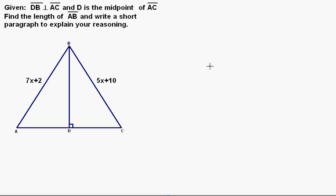First of all, the fact that line segment DB and AC are perpendicular means that these angles are both 90 degrees, so these angles are the same.